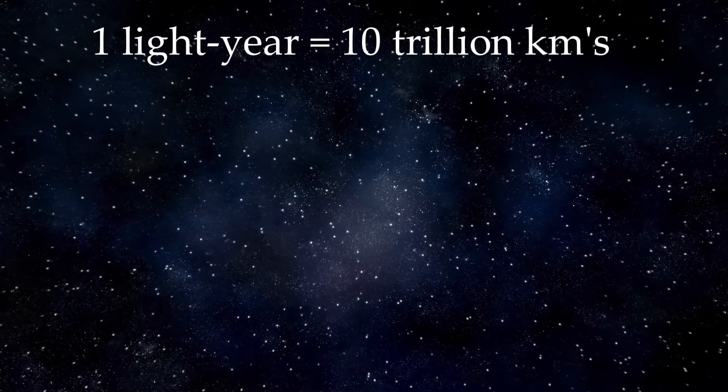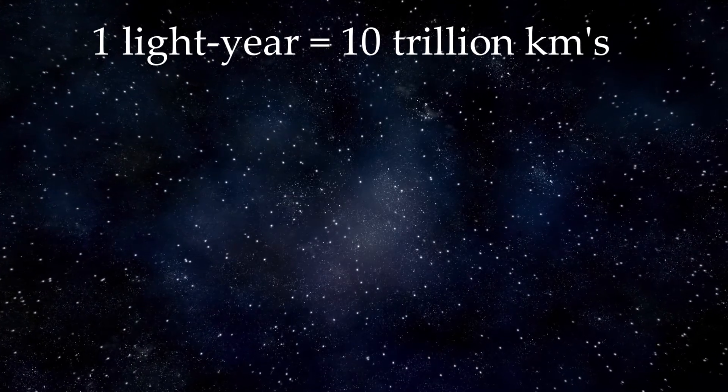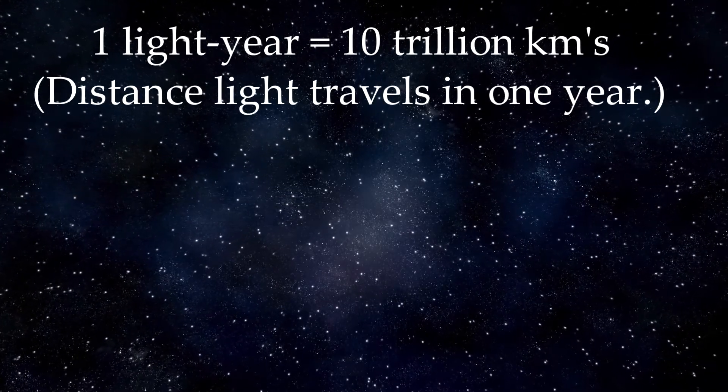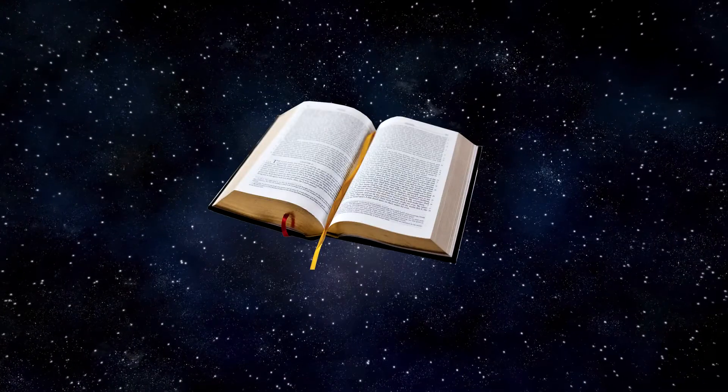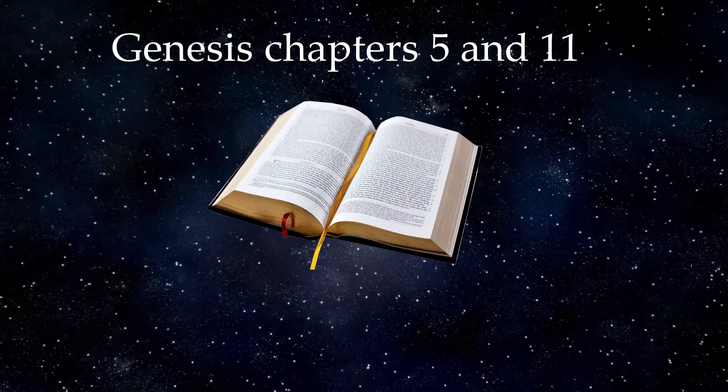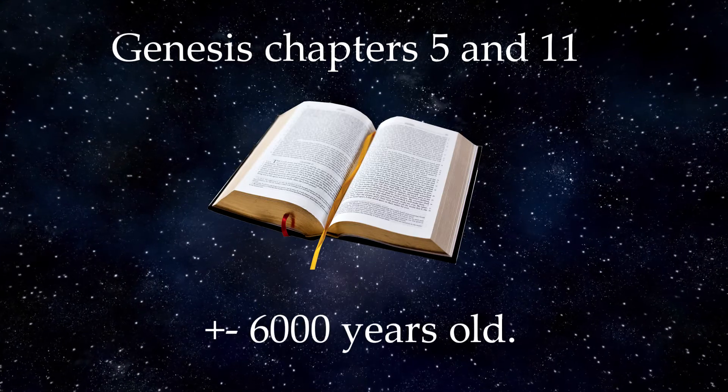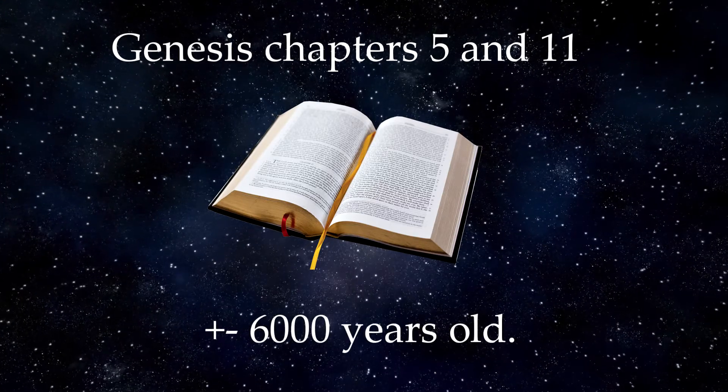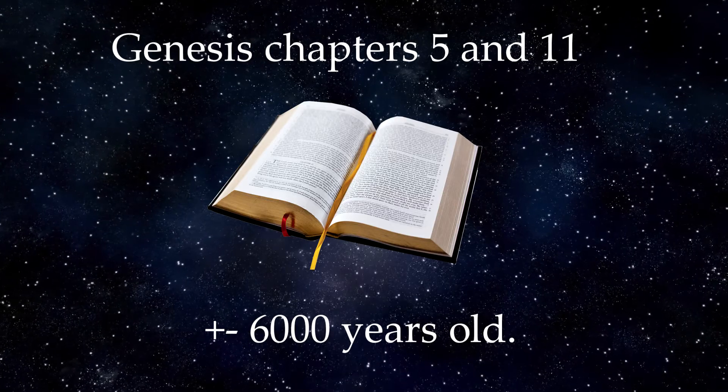The universe is truly vast in size. It has been calculated to be tens of billions of light years in size. One light year is about 10 trillion kilometers, the distance light travels in one year. By taking a literal history from Genesis chapters 5 and 11, you can calculate that the universe is only about 6,000 years old. If so, how does starlight get to Earth from a distance greater than 6,000 light years?